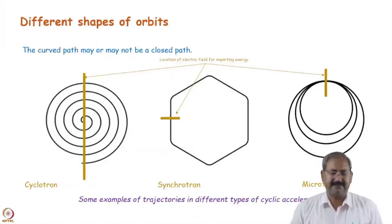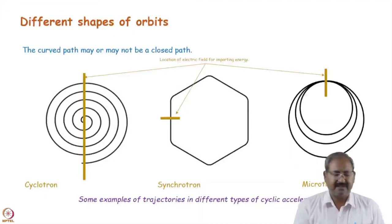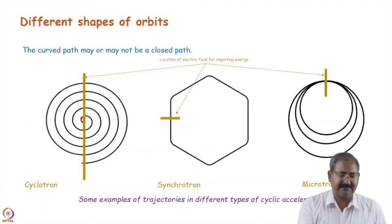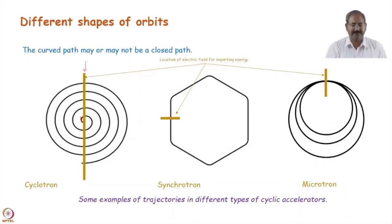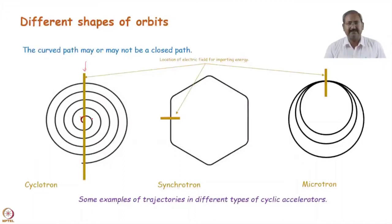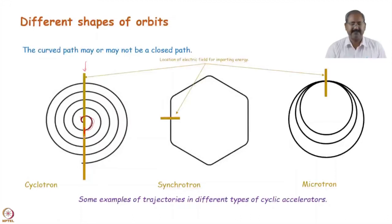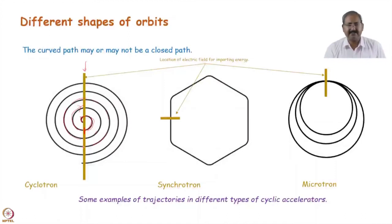The curved path may be of different types. In a constant magnetic field with an electric field applied at a gap: when the charged particle crosses the gap it gains energy, and with higher energy the magnetic field bends it less, so its radius of curvature increases and it follows a larger circuit. Each time it passes through the gap it gains more energy and follows an even larger path. This produces a spiral orbit — this kind of orbit is found in the cyclotron.